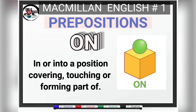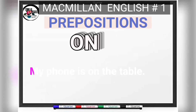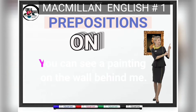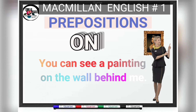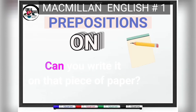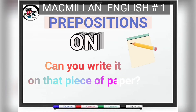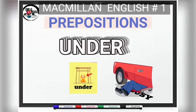Now let's look at the preposition ON. It's used to talk about the position of something on surfaces, or things that can be thought of as surfaces, like walls or tables. For example: My phone is on the table. You can see a painting on the wall behind me. Can you write it on that piece of paper?